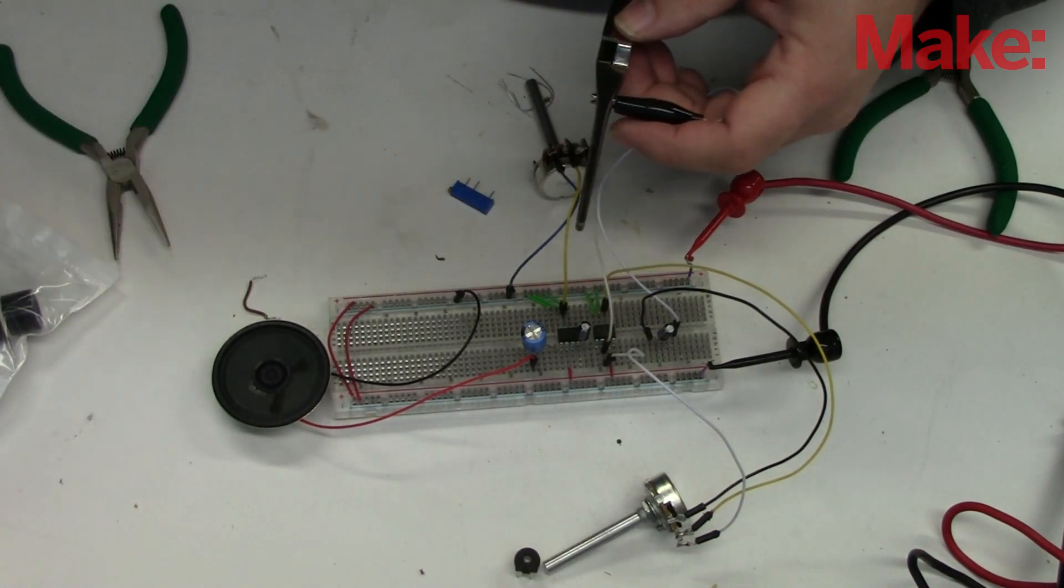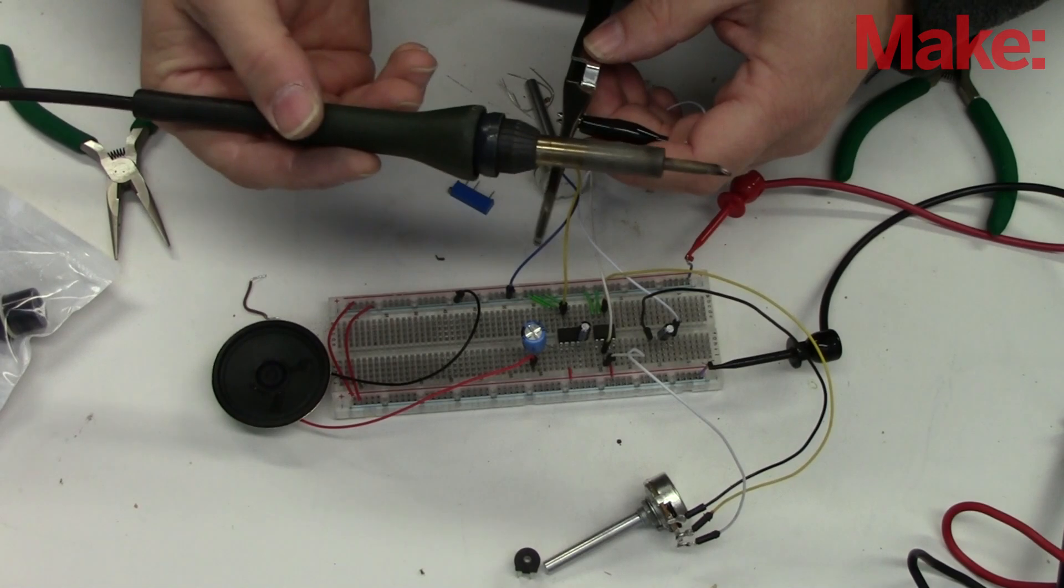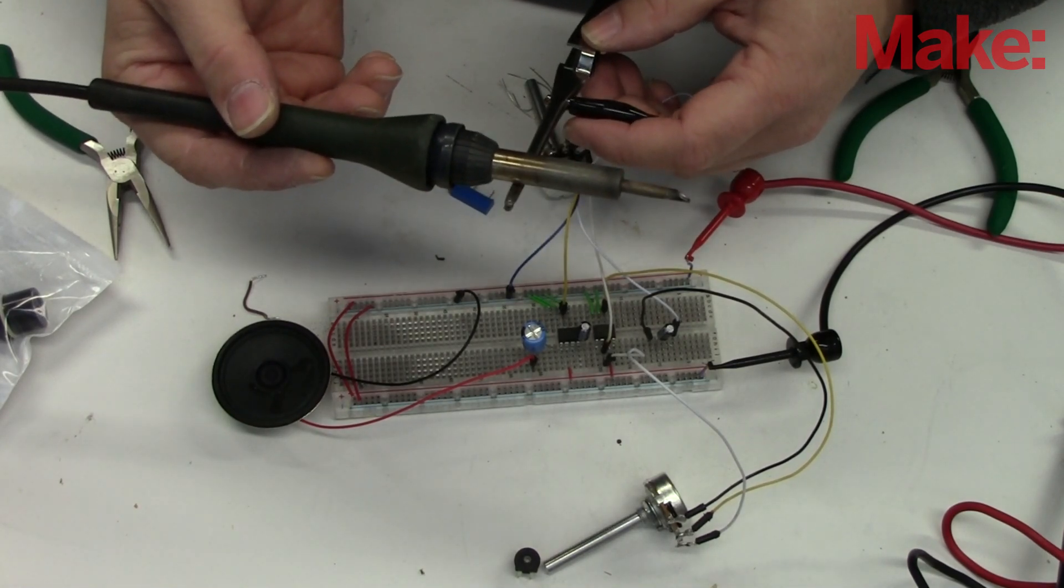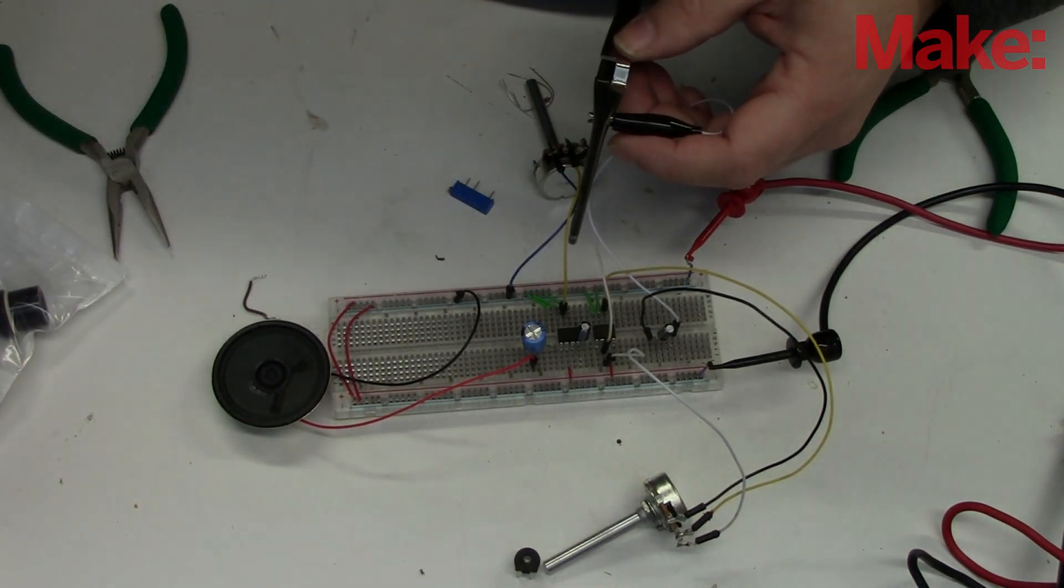By connecting it to the tweezers and then actually pressing it up against the soldering iron, I can actually get the 60 cycle hum from the power mains that are going into the soldering iron.